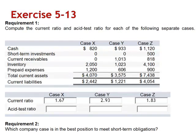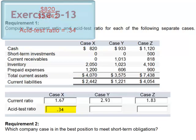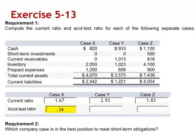For case X, the numerator now becomes $820 divided by current liabilities, 2,442. The acid test ratio is 0.34. The company only has $0.34 in quick current assets for every dollar of current liabilities.